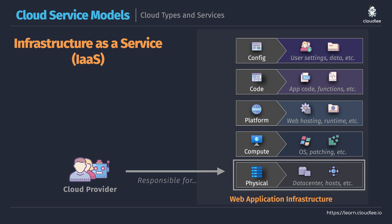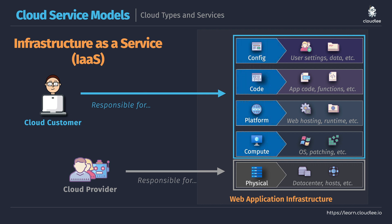With IaaS, the cloud provider will be responsible for the infrastructure — managing the underlying physical data centers, the hosts, storage, network connectivity, whatever physical assets are needed. However, everything else is up to us to manage. If we use an Infrastructure as a Service solution to host our web application, that would be, for example, an Azure Virtual Machine or an AWS EC2 instance. We don't need to manage the physical, but we do need to manage everything else — we will certainly reduce administrative overheads, but we can't forget about the other responsibilities.